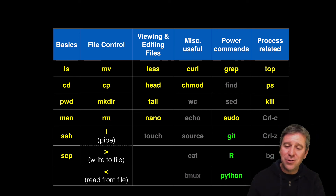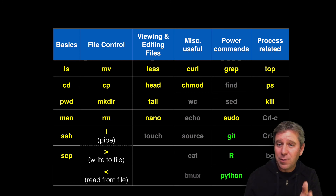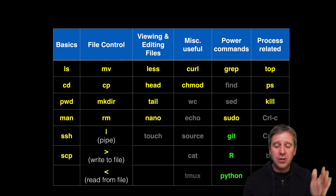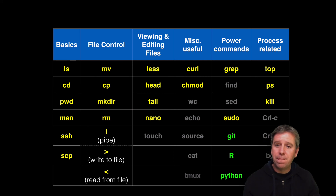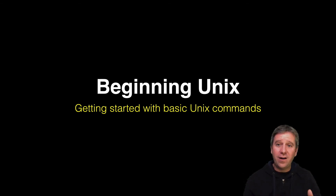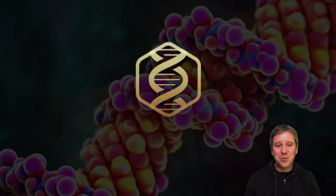There will be other commands you'll look up on a bespoke basis, but these are the ones I use most of the time and that you'll use most of the time too. Three commands highlighted in green — R, Git, and Python — are more involved and we'll deal with those separately in dedicated sections. Please join me in the next video where we start to use and learn these 20-odd key UNIX commands together.